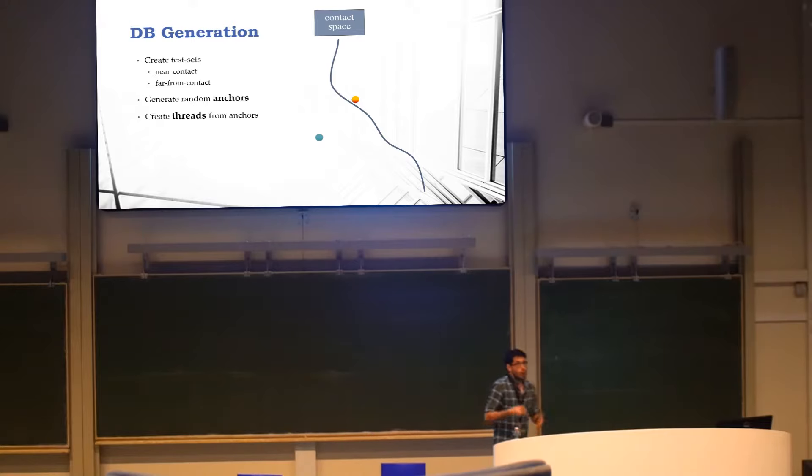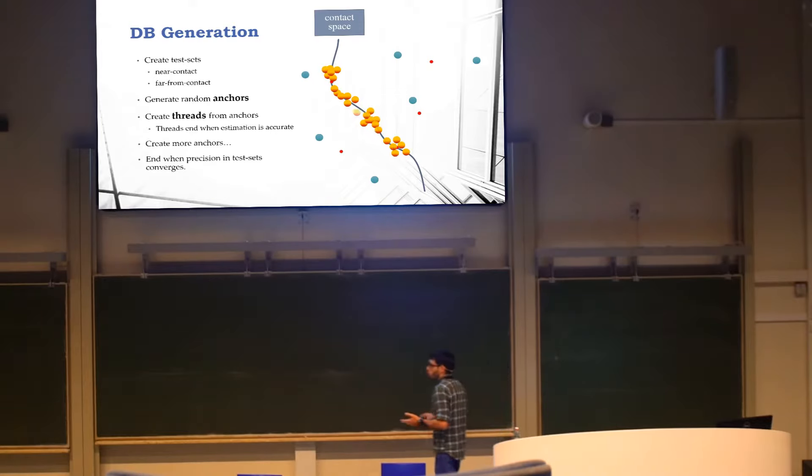So we reached some configuration, hopefully it's on the other side, and that's the next configuration in the thread, and the thread continues. For each such sample, apart from sampling it exactly and storing it in a database, which is a main point, we also estimate it. Once the estimation is accurate enough, the thread is considered converged. So that's just a single thread, and then we can do that concurrently for multiple threads. We extinguish all of the anchors and create new anchors, and the process continues until some several measures of precision have converged continuously over the test set. So that's the creation of the database, and that's the third main point.